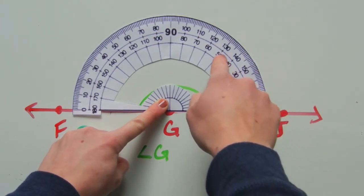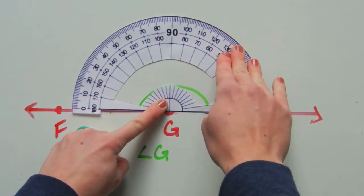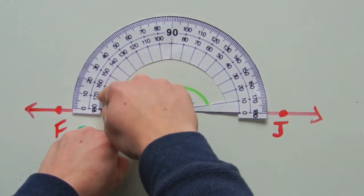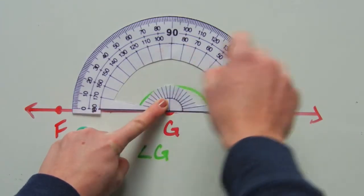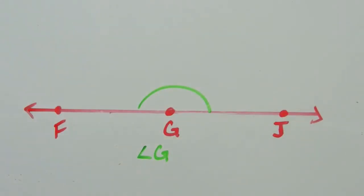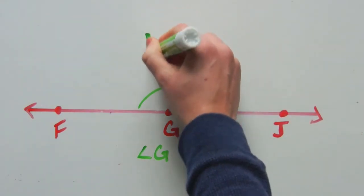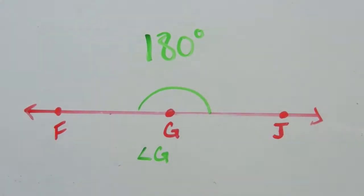10, 20, 30, so on, to 90, and continuing around all the way to 180. So the angle of G is 180 degrees.